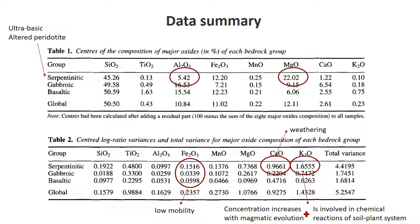The first table we look at is the centers of the composition — the geometric means calculated from the compositions. We're dealing with three types of soils from three types of bedrock material: serpentine, gabbro, and basalt. Gabbro and basalt are similar to each other. As a result, we notice differences in the composition of serpentine versus the other two, particularly in terms of aluminum oxide and magnesium oxide.